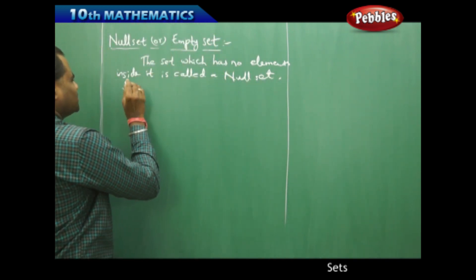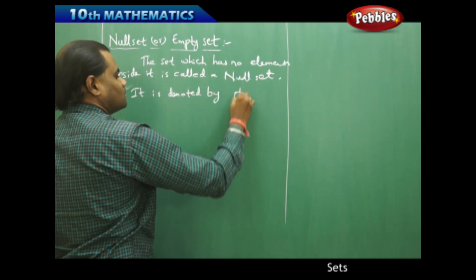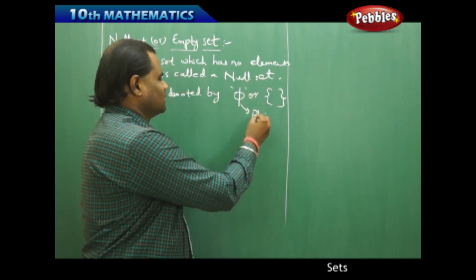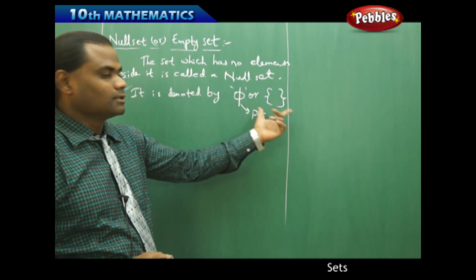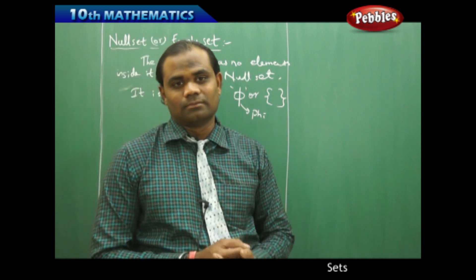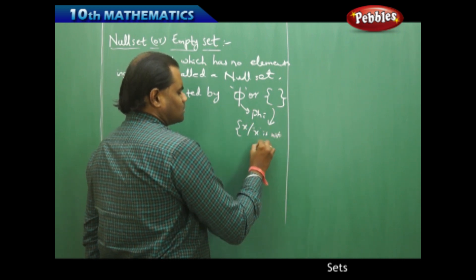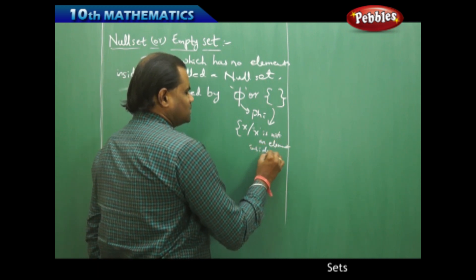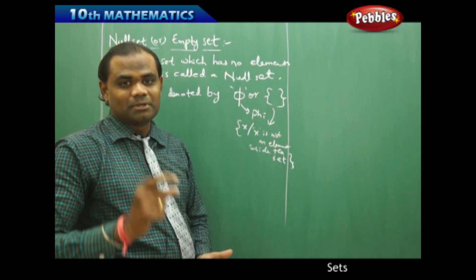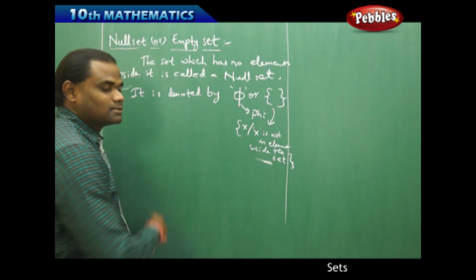The notation for the null set is denoted with phi (φ) or the empty braces symbol {}. Usually the null set is denoted with phi — this is read as phi and it is one of the symbols for the null set. There are no elements inside it. How do I write the set builder form? It's very simple — I write it as {x : x is not an element inside the set}. This is how I write the null set.